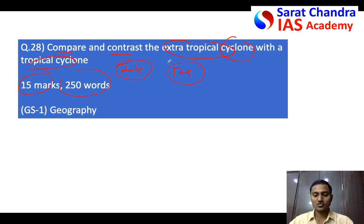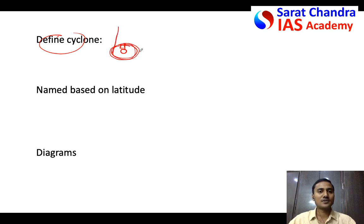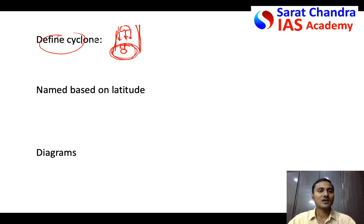First, define cyclone. You can say: a cyclone is a system of winds that circulate around a low pressure area, causing the wind to rise up, and because of cooling, clouds are formed and there is precipitation. So cyclones are a system of winds circulating around a low pressure area causing the rise of air, formation of clouds, and precipitation.